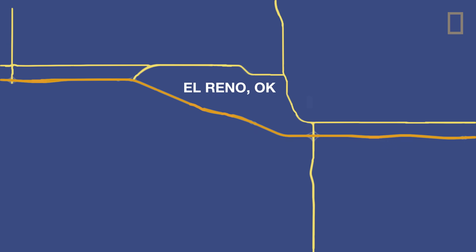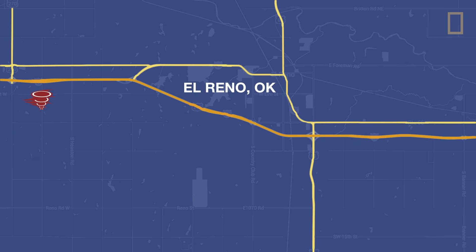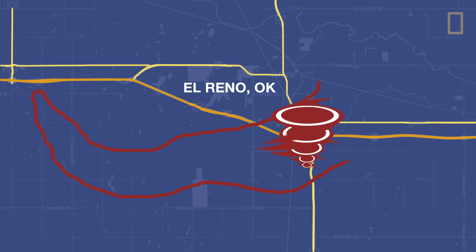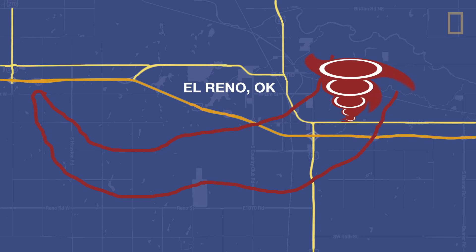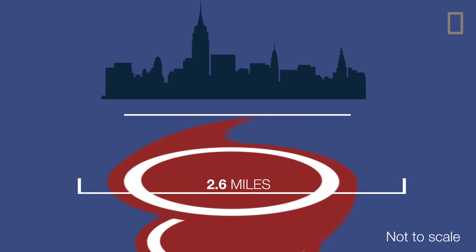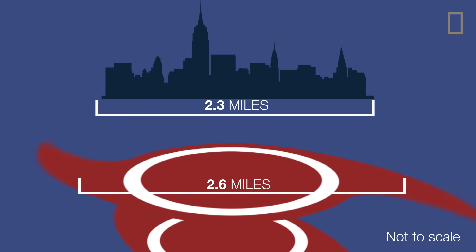The widest tornado ever recorded, the May 2013 El Reno tornado in Oklahoma, was 2.6 miles across. That's wider across than Manhattan.